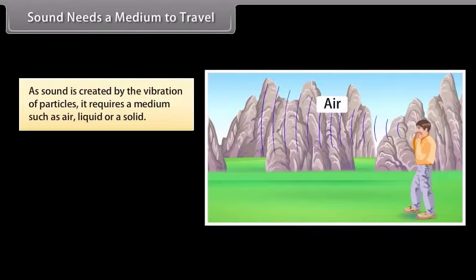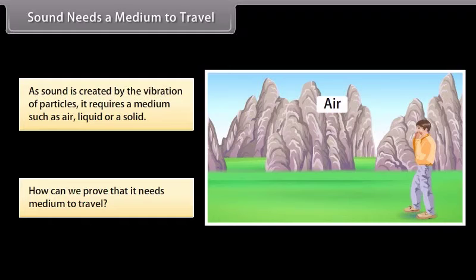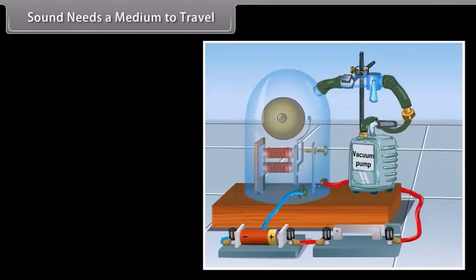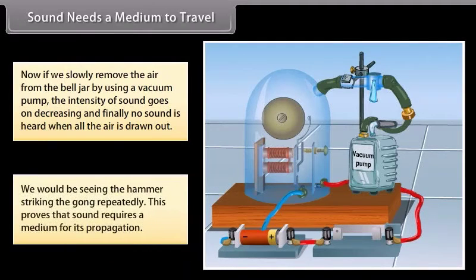Sound needs a medium to travel. As sound is created by the vibration of particles, it requires a medium such as air, liquid or a solid. But how can we prove that it needs medium to travel? Look at this figure: an electric bell is suspended inside an airtight glass bell jar connected to a vacuum pump. As the electric bell circuit is completed, the sound is heard. Now if we slowly remove the air from the bell jar by using a vacuum pump, the intensity of sound goes on decreasing and finally no sound is heard when all the air is drawn out. We would be seeing the hammer striking the gong repeatedly. This clearly proves that sound requires a medium for its propagation.